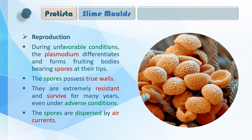Unfavorable conditions में slime mold क्या करती है? During unfavorable conditions, the plasmodium differentiates and forms fruiting bodies bearing spores at their tips। जो plasmodium favorable conditions में form हुए थे वो differentiate होंगे और fruiting bodies बनेंगी, और उनके अंदर बहुत सारे छोटे-छोटे spores होंगे, जैसा figure में दिख रहा है। Fruiting bodies और spore formation fungus से मिलता जुलता है, जो हम fungus kingdom में पढ़ेंगे।